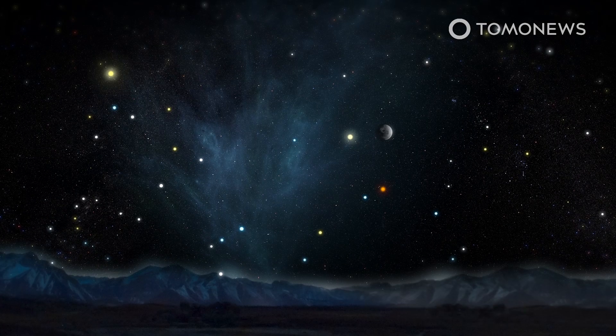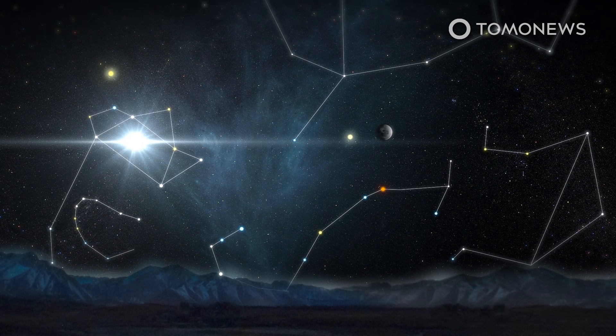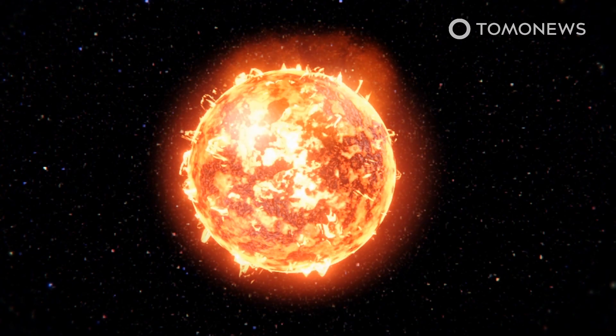Astronomers at NASA and the ESA have discovered a neutron star called Swift J1818.0-1607. The star was born in a supernova that would have been visible from Earth 240 years ago. A supernova occurs